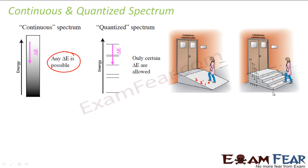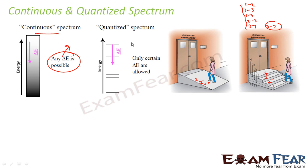There are only 4 steps. The possible combinations, if you mark them 1, 2, 3, 4, are: 1 to 2, 1 to 3, 1 to 4, 2 to 3, 2 to 4, or 3 to 4. Only these many possible combinations are there. If it is quantized, only few delta E values are possible. If it is not quantized, the student can move anywhere. So when you talk about continuous spectrum, delta E can have any possible value. But when you talk about a quantized spectrum, delta E can have only certain values. And that is what Bohr told — in case of atoms, the spectrum is quantized.